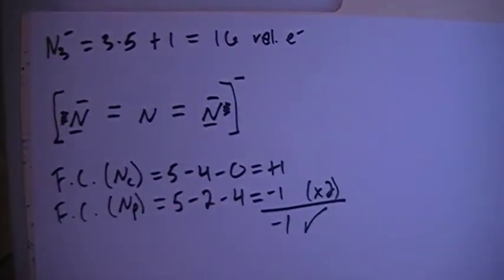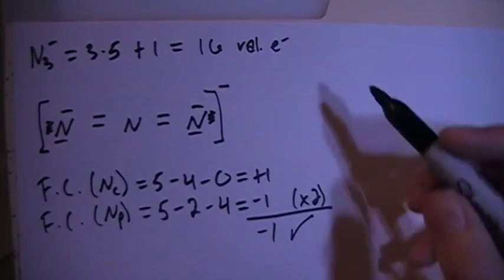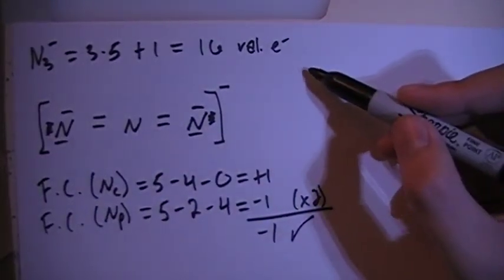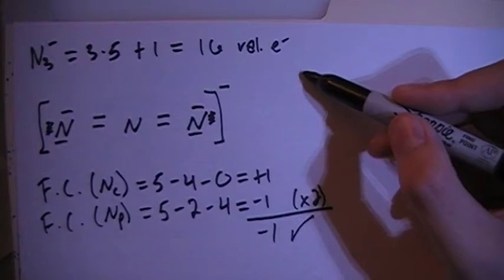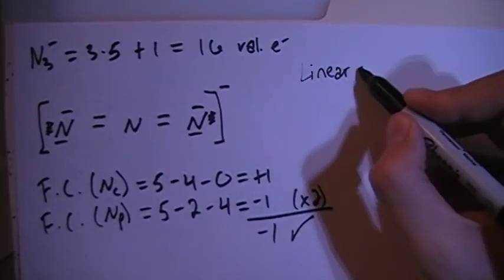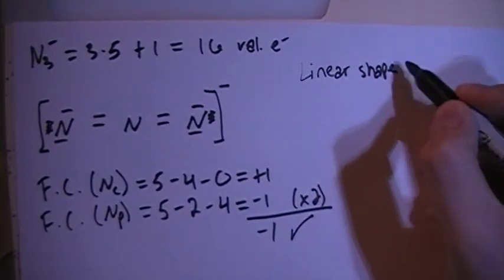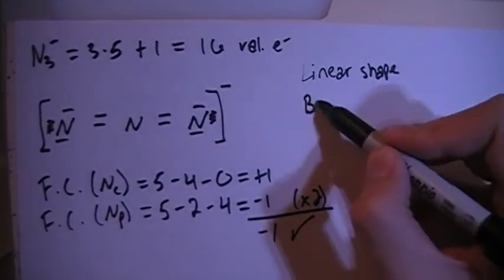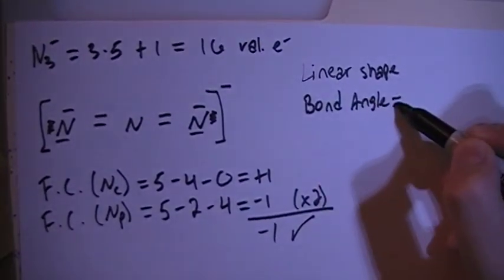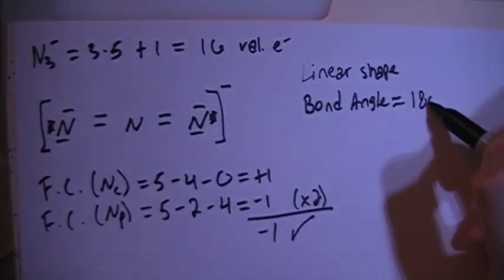So that's what we're looking for. Now we're going to talk about the shape real quick. There's 3 atoms in a row. 3 atoms means there's going to be a linear shape. And when you have a linear shape, that means that the bond angles are going to be approximately equal to 180 degrees.